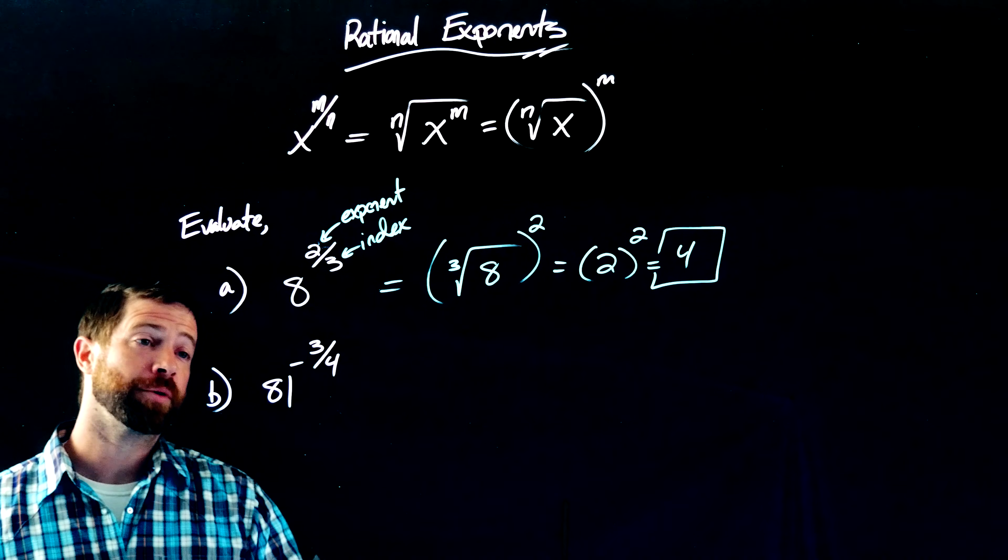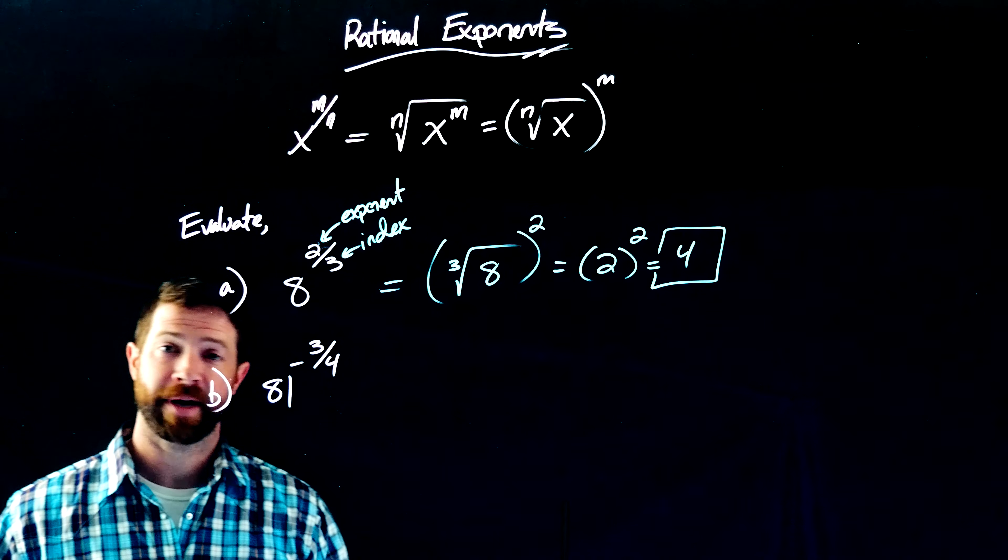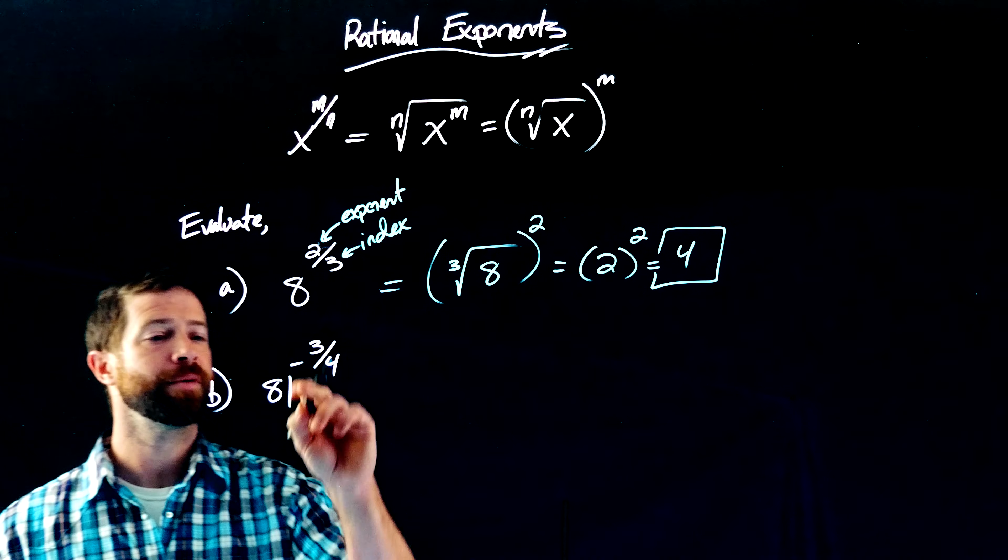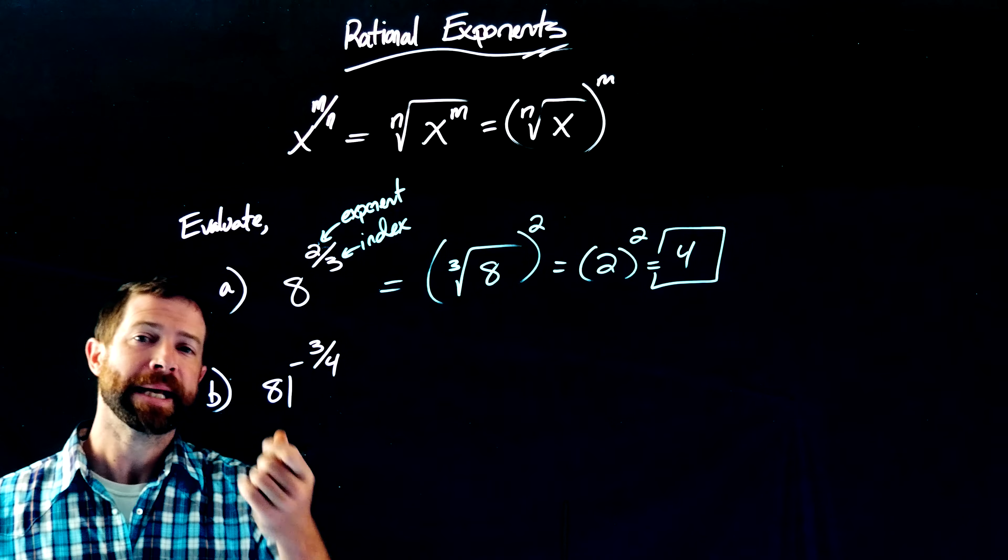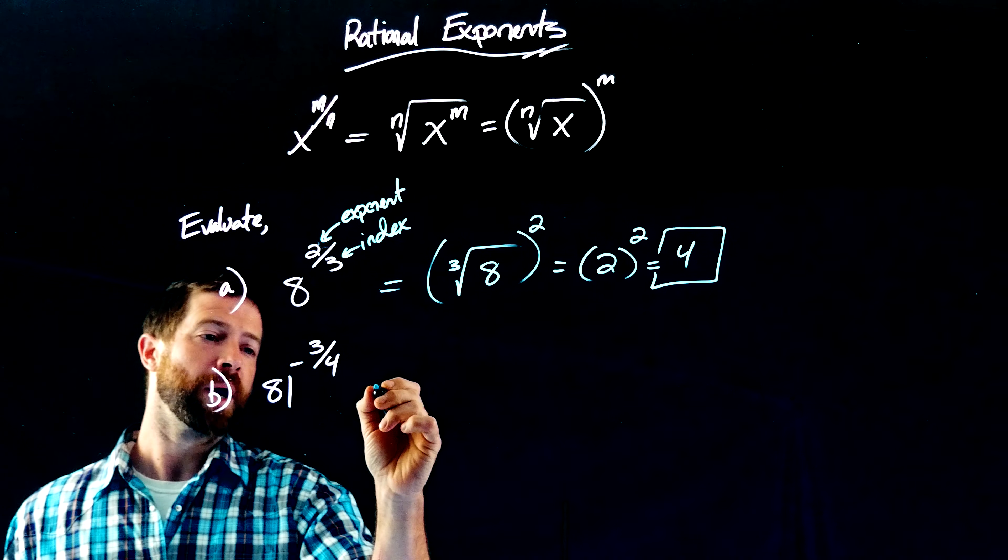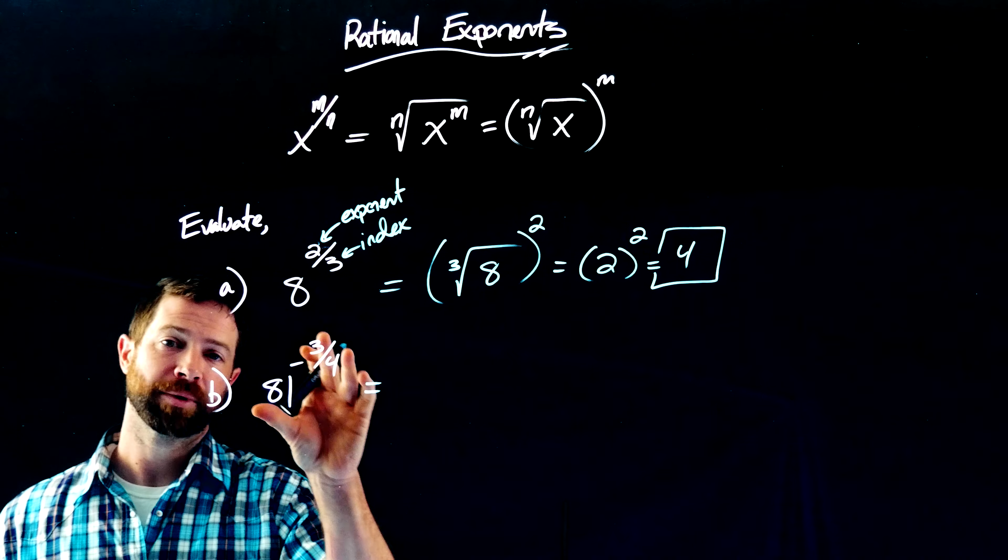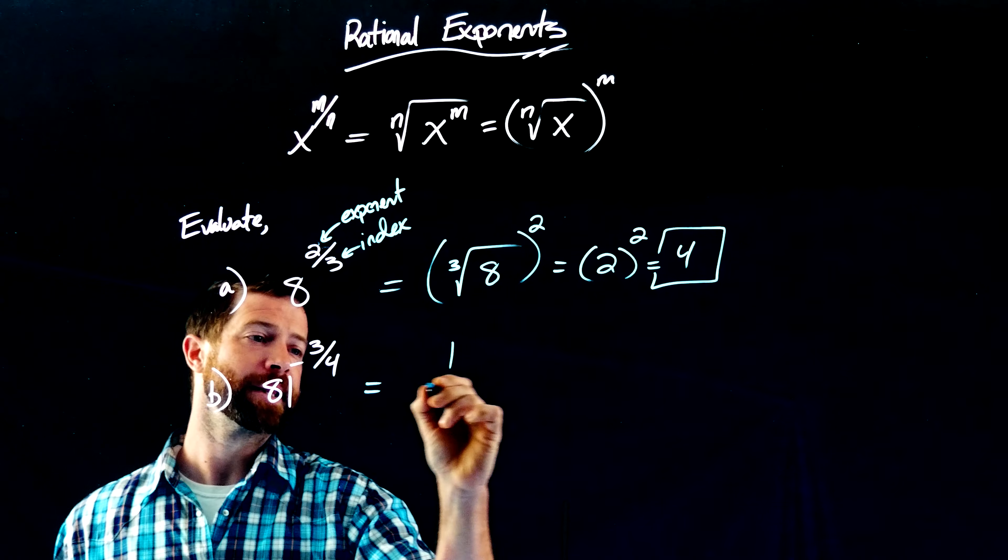81 to the negative 3 fourths. So now I've brought in the idea of a negative exponent. This isn't too much of a trip. Remember, the negative exponent does not mean a negative number. It means the reciprocal. So I can actually apply this negative exponent to this expression.